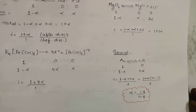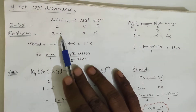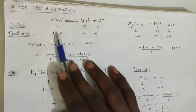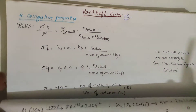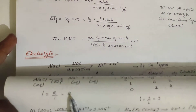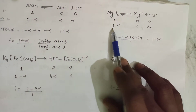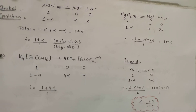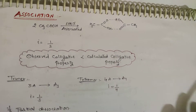If α = 1 (100% dissociation), i = 1 + (n-1)(1) = n, which confirms our earlier results. For NaCl with α = 1: i = 2. For MgCl₂ with α = 1: i = 3. The formula α = (i - 1)/(n - 1) applies whenever dissociation is partial.